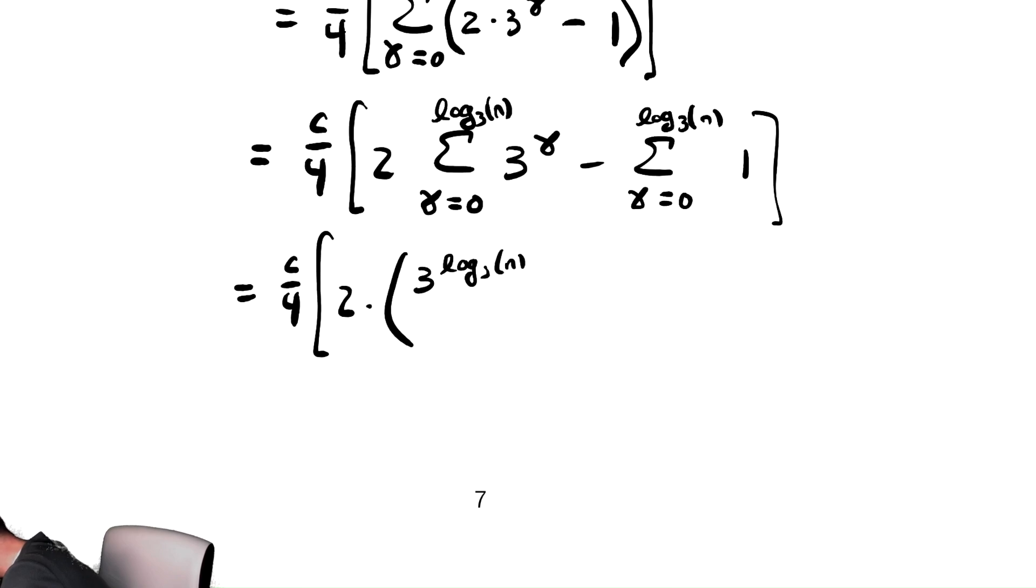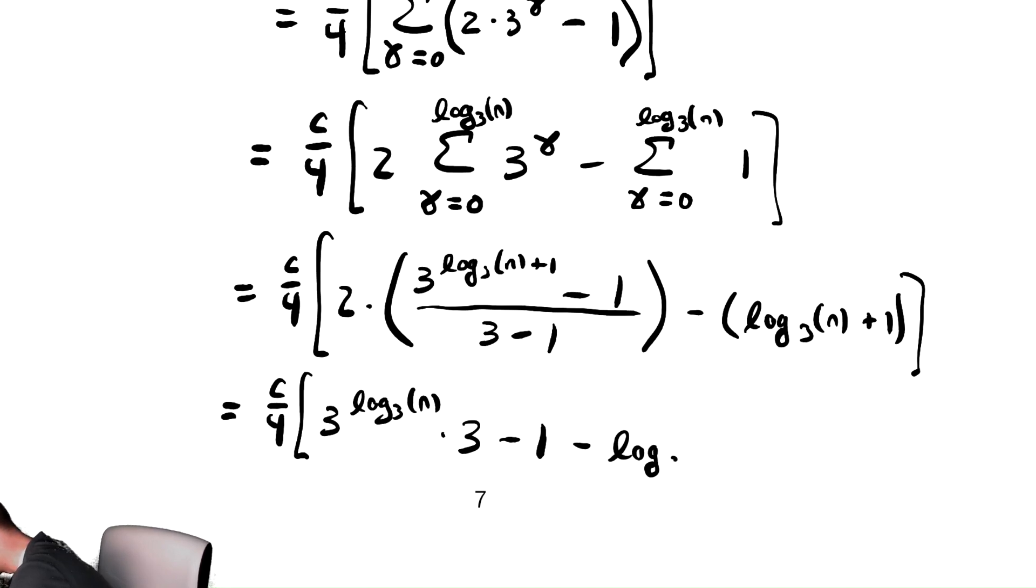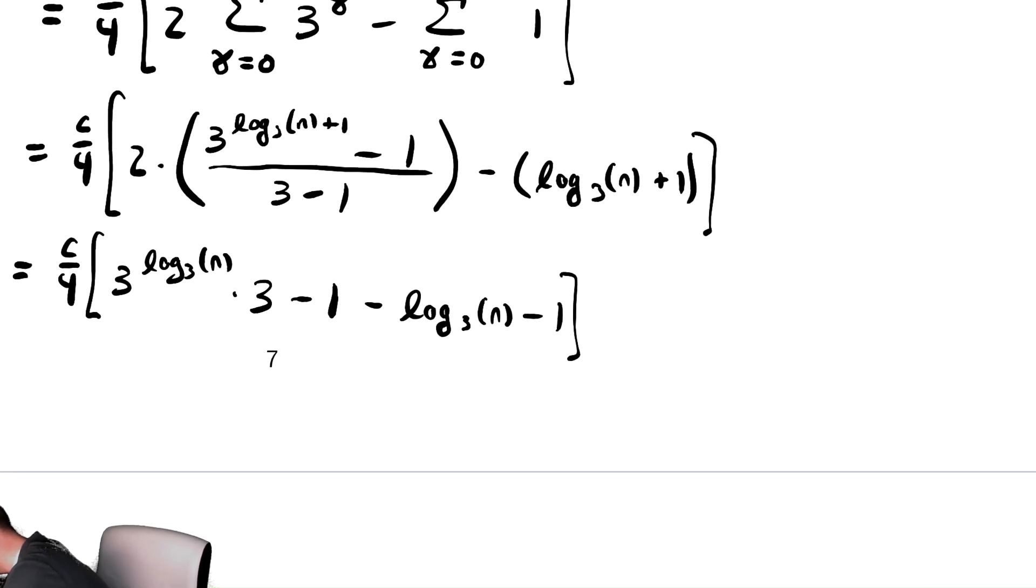So I write this as 2 times the sum from gamma equals 0 to log base 3 of n of 3 to the gamma minus the sum from gamma equals 0 to log base 3 of n of 1. And now I have two summations I can actually deal with. I can use my finite geometric sum formula on the first summation and the second summation is a constant summation. Gamma does not appear inside of it. Therefore, I can take the sum and multiply by the number of terms in the summation. So this is equal to c over 4 times quantity 2 times parentheses. We have the common ratio to the top bound plus 1 minus 1 divided by the common ratio minus 1 minus the second thing we take the sum, which is just 1, and multiply by the number of terms. The number of terms is the top bound minus the bottom bound plus 1. That second term we can now see is not so bad. It's just log of n plus 1. The first term we have a bit more algebra to do. We have c over 4 times we have 2 multiplied by something divided by 2. So those 2's cancel out for me and I have 3 to the log base 3 of n times 3 minus 1 because all my constants cancel minus log base 3 of n minus 1. And now I can just do a bit more simplification. We have c over 4 times just as we saw in the past. We can cancel out the 3 and the log 3 and write this as 3n minus log base 3 of n minus 2.